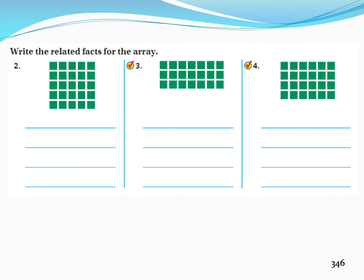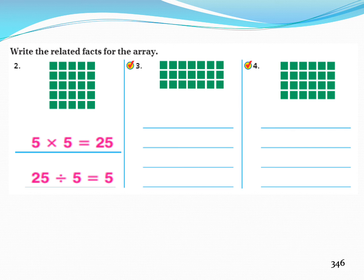We are still on page 346. Write the related facts for the array in question 2. It has 5 rows and 5 columns. So, 5 multiplied by 5 equals 25, and 25 divided by 5 equals 5.